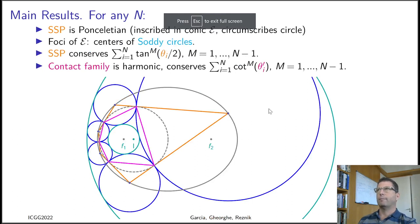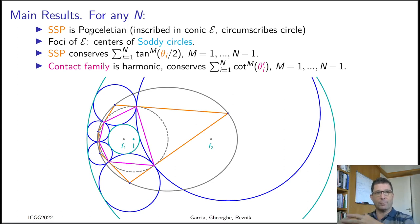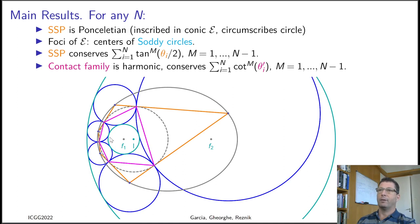The main results we want to discuss are: first, that the orange family — which we call the Steiner-Soddy family — is Ponceletian. A Poncelet Porism relates to a one-dimensional family of polygons simultaneously inscribed in a conic while circumscribing a second conic. We show in our paper that this is the case for the family of polygons defined by the centers of the Steiner circles.